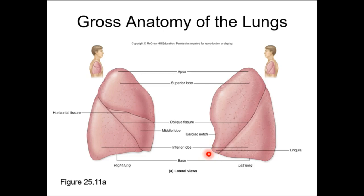You can see the lingula here. It can be confusing distinguishing the lingula versus the cardiac notch. What the cardiac notch is actually pointing at is that deeper concave surface. If I have to test you on that with just an arrow, look at the prompt — I would say something like 'medial surface' or 'deeper surface' or 'concave surface' to indicate whether I'm pointing at the lingula or the cardiac notch.